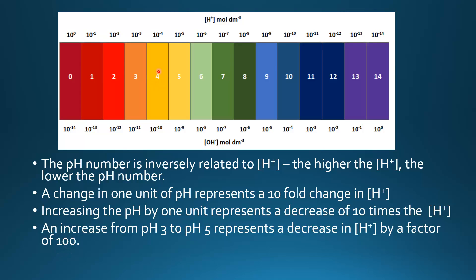If we decrease the pH from pH 4 to pH 1, it represents a thousand times increase in hydrogen ion concentration.